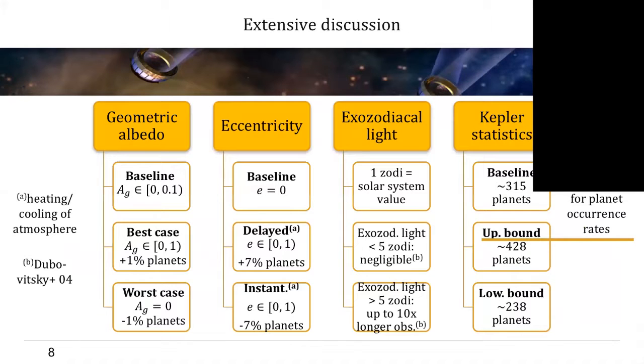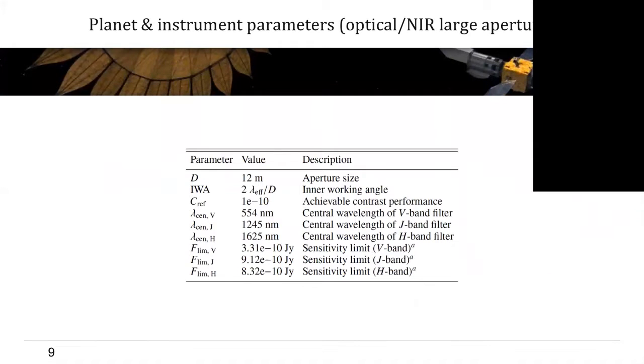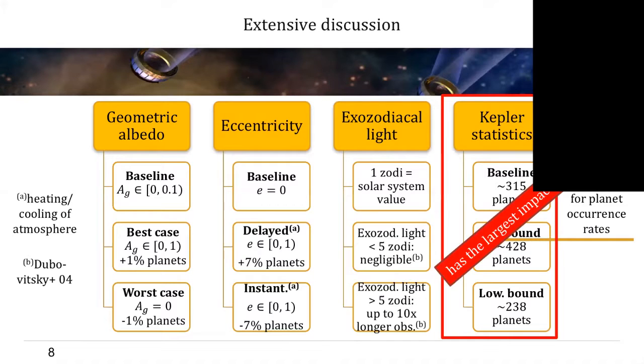In our paper, we also present an extensive discussion on the assumptions and how variations in the assumptions affect the results. But because time is very short, I only want to mention the most important point here, which is that the uncertainties are dominated by the uncertainties in the underlying Kepler statistics, which could affect the final results by plus or minus 30 percent.